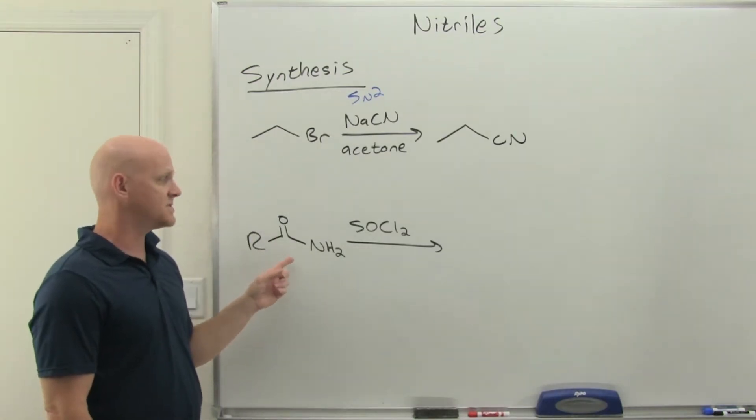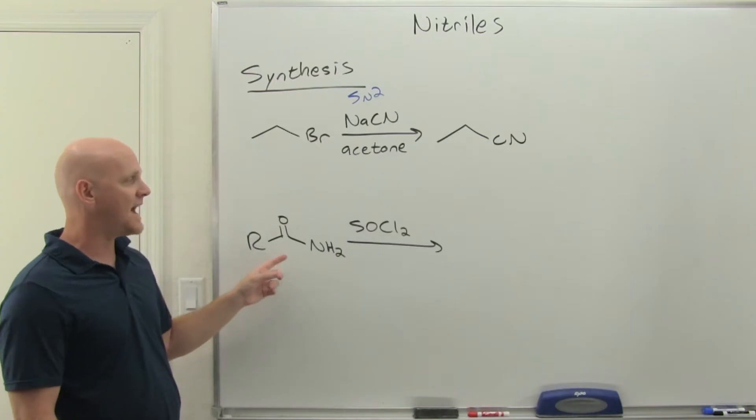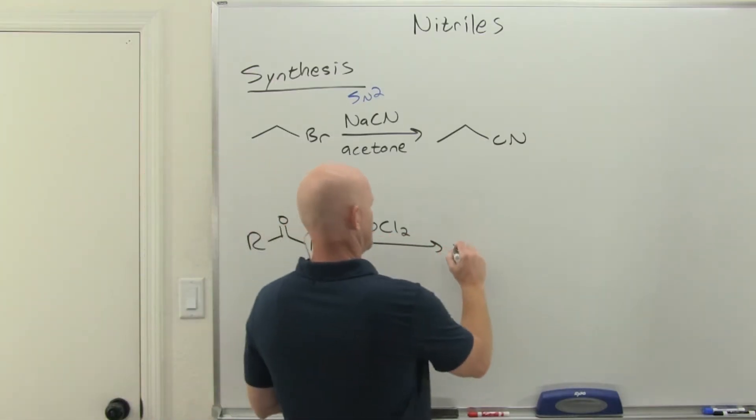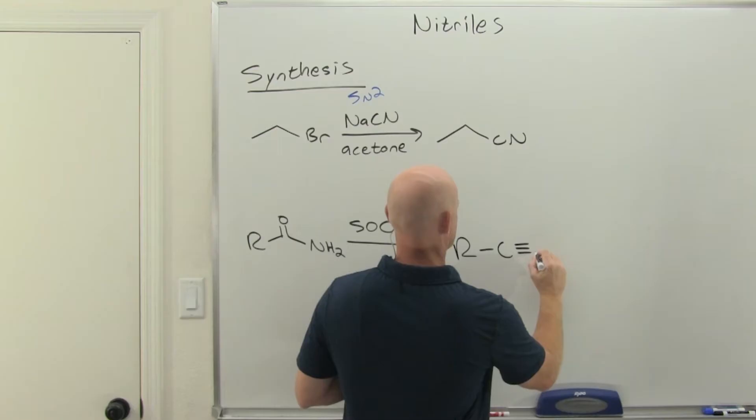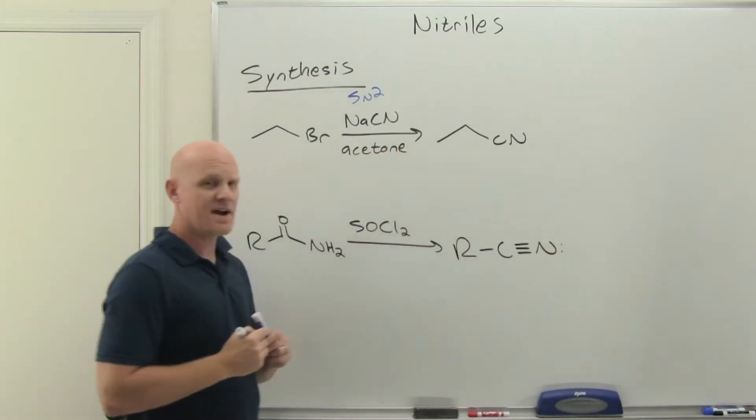The other thing we can do is from this particular chapter. We can dehydrate an amide using thionyl chloride and make the corresponding nitrile as well.